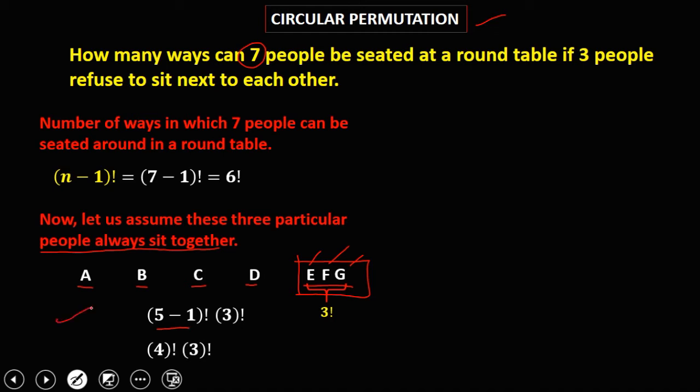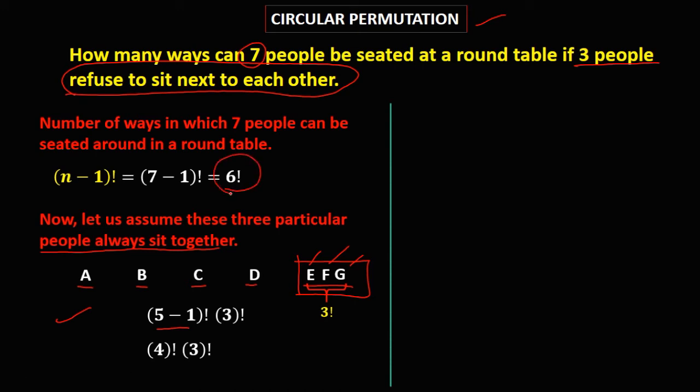Since this event is just a complement of this problem, because in the problem 3 people refuse to sit next to each other, the total number of ways is 6! minus 4! times 3!.